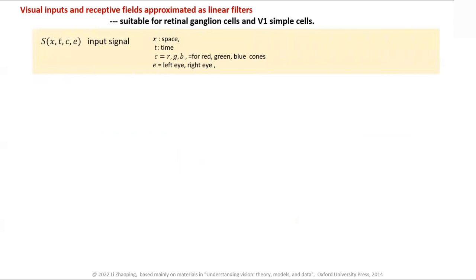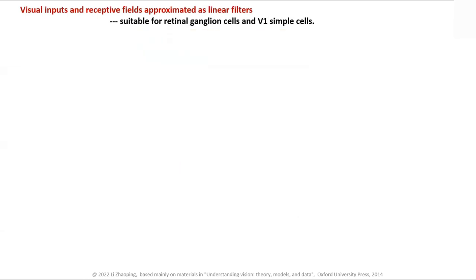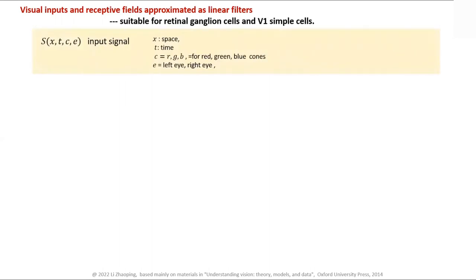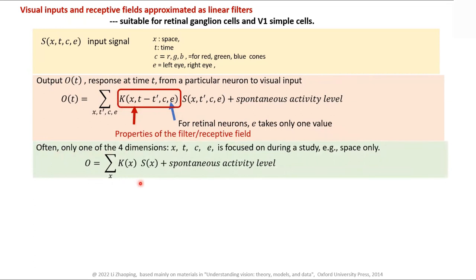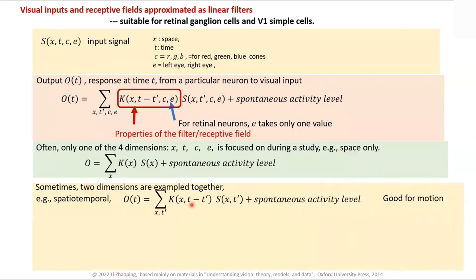Now let's dive into more detail on what people measure. The input signal is x — a function of space, time, cone type (RGB), and which eye (left or right): a four-dimensional thing. If a neuron is linear, its output is a linear filter K acting on x for that particular neuron, plus some spontaneous activity. What you want to measure in the experiment is really what that K is. Often experiments focus on one dimension — say, just the spatial filter — where you pretend it's not a function of time, and measure the spatial kernel.